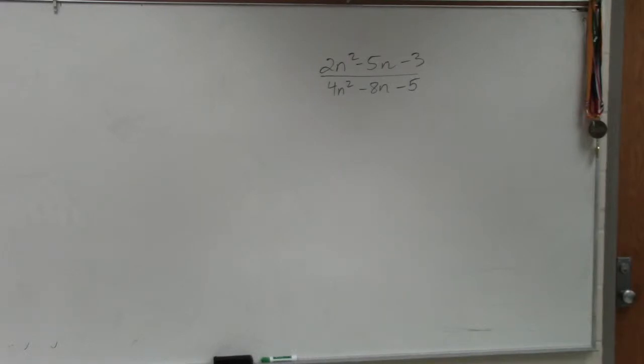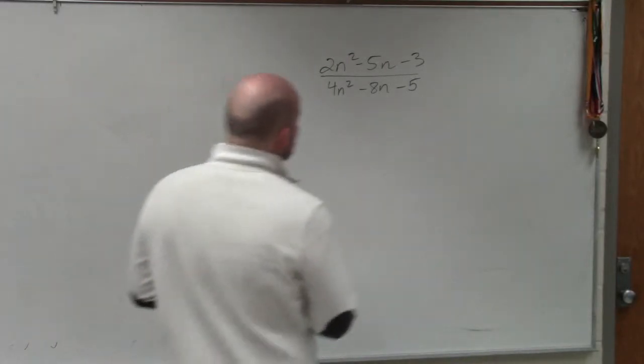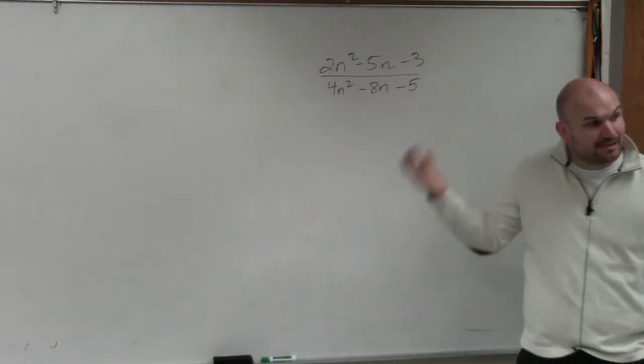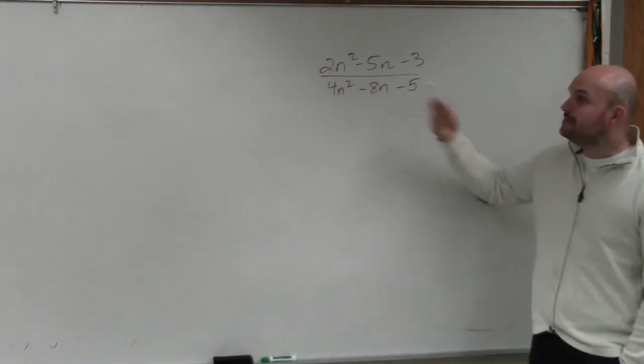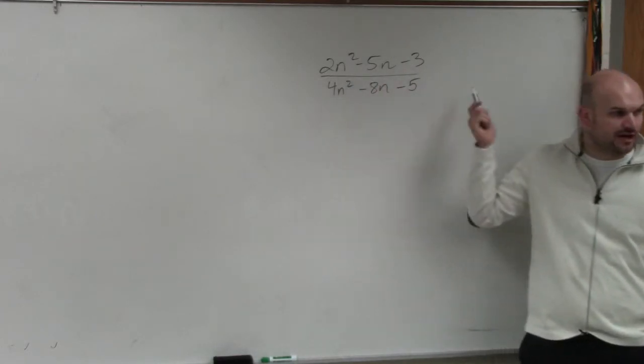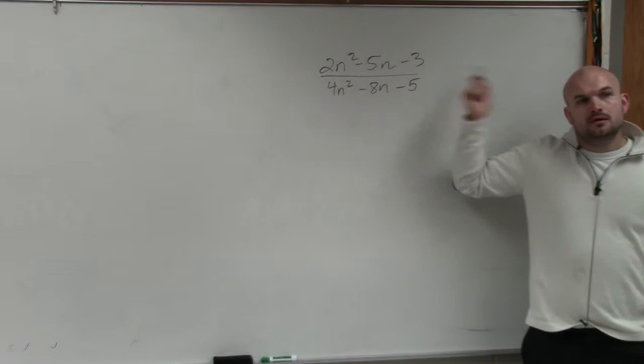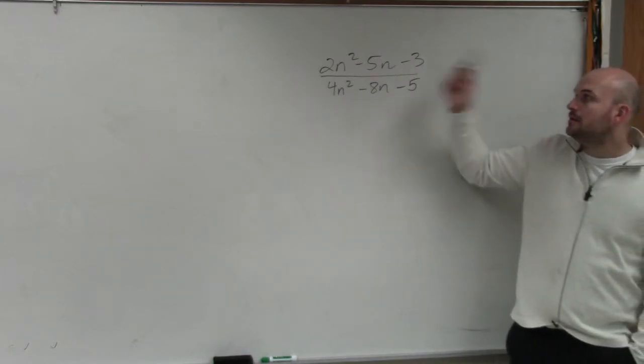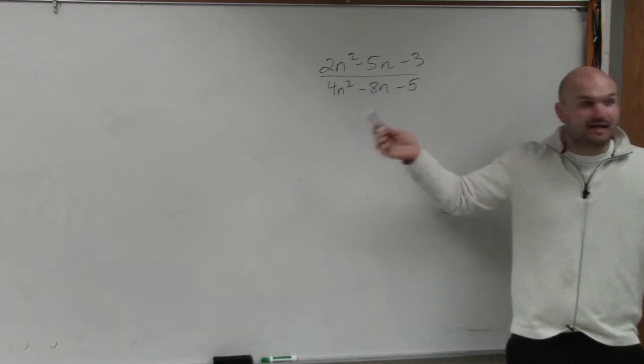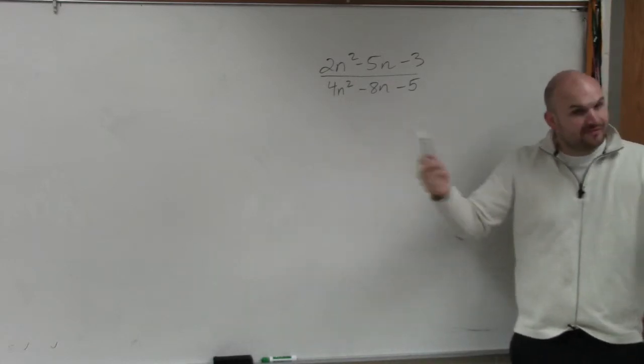When you have the AC method, the main important thing when we're factoring these is simplifying. But the problem we have here, before we get into simplifying, we want to see can we factor out any GCF in either one of these trinomials? Well, they don't share the two and the three. None of these share any common factors. So we have to factor these.